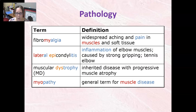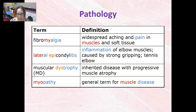Let's go over the pathology terms. Fibromyalgia is a condition with widespread aching and pain in the muscles and soft tissue. Lateral epicondylitis is inflammation of the elbow muscles. It is caused by strong gripping and is often referred to as tennis elbow.